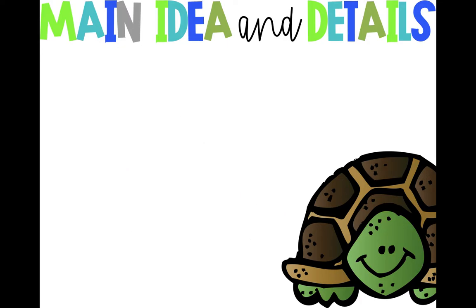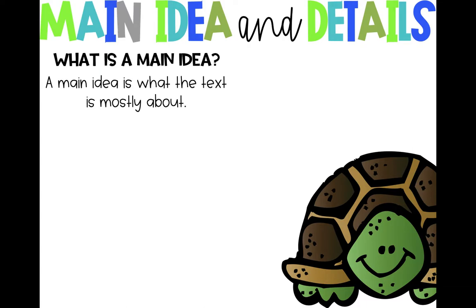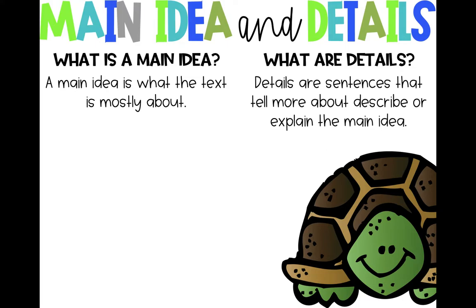This week we are going back over main idea and details — we've talked about that before, so we're just going to do a review. The main idea is what the text is mostly about. Details are the sentences that tell more about or describe the main idea, so the details describe or explain the main idea.